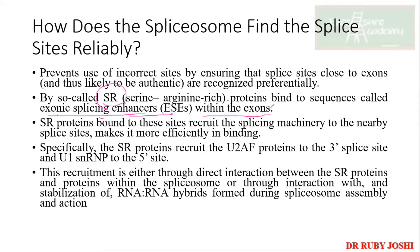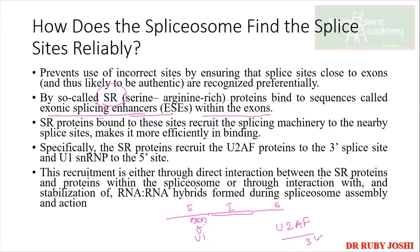ESEs are present within the exon regions. SR proteins come and bind to these ESE sequences, making sure the splice sites are nearby, which makes it efficient for the spliceosome to bind. These SR proteins recruit the splicing machinery — for example, U2AF proteins and U1 at the 5' splice site and U2AF at the 3' splice site.